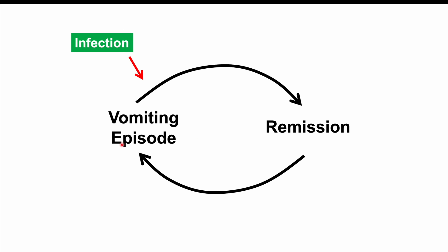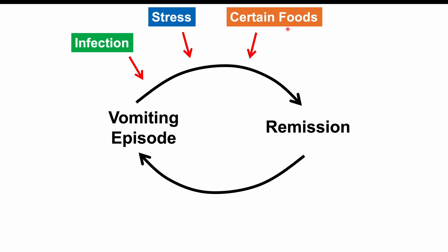There are many different triggers for CVS. Infection is the number one trigger. Stress — physiological stress — is another important trigger, likely related to issues with stress signaling. Certain foods can also trigger episodes, including cheese, chocolate, and foods with monosodium glutamate — the same foods that can trigger migraines. Sleep deprivation is also a potential trigger, as is excitement.